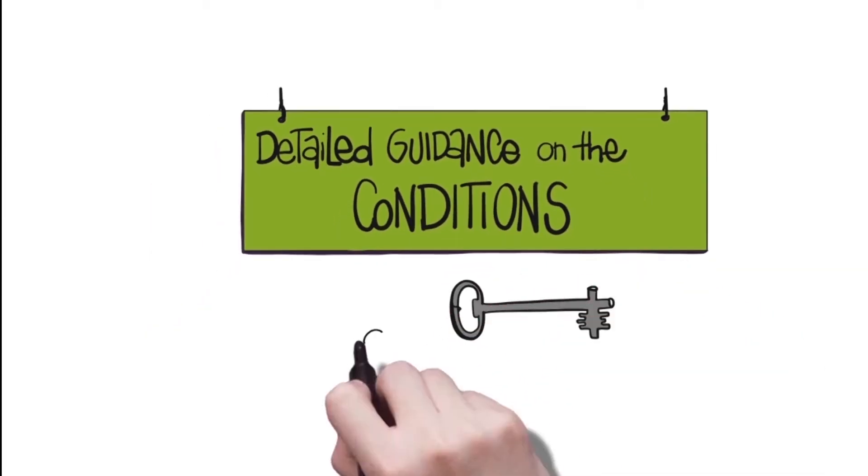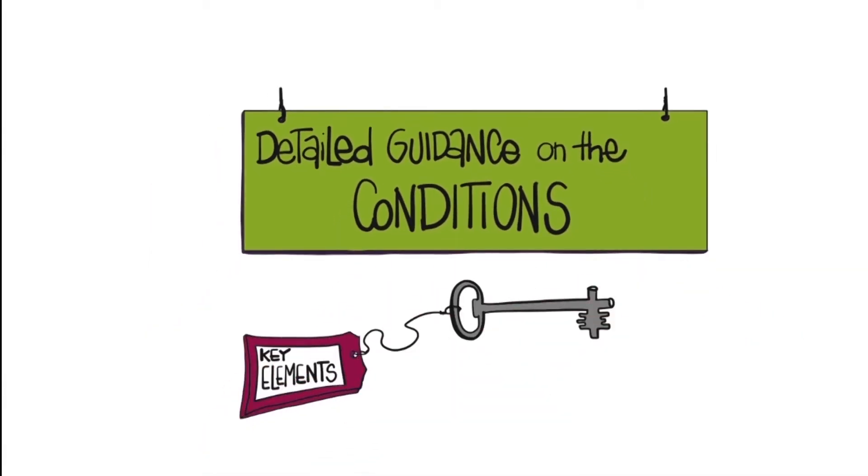The ILO Instruments on Migrant Workers provide detailed guidance on the conditions in which labour migration should take place. In particular, they recognize the following key elements and principles.